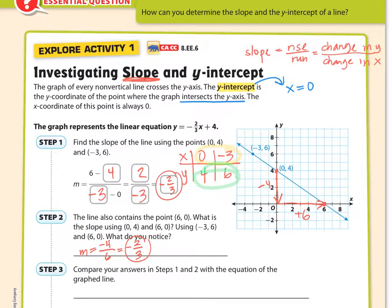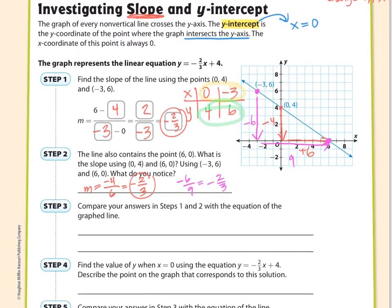If I wanted to do from the first point, let's do a different color here. If I want to do from the (-3, 6), I'm doing this in pink, all the way to (6, 0), then I'm actually going down 6, that's -6, and over a total of 9. So -6 over 9 would still be -2/3. So same exact slope.